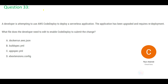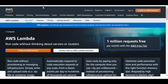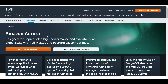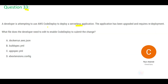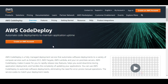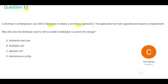Let's look at the next question — this is actually Question 34. You have to deploy a serverless application, something like Lambda or Aurora, and you are using CodeDeploy to do it. CodeDeploy automates code deployments. Now you have upgraded the application and want to redeploy it. The question asks: what file will you change to enable CodeDeploy to submit the change again?